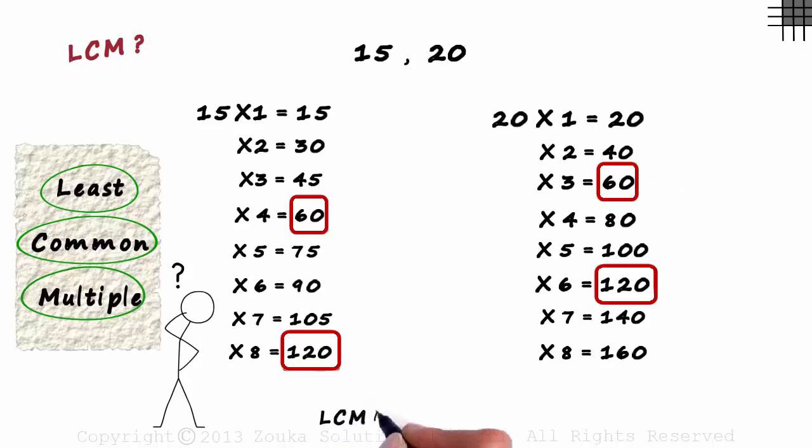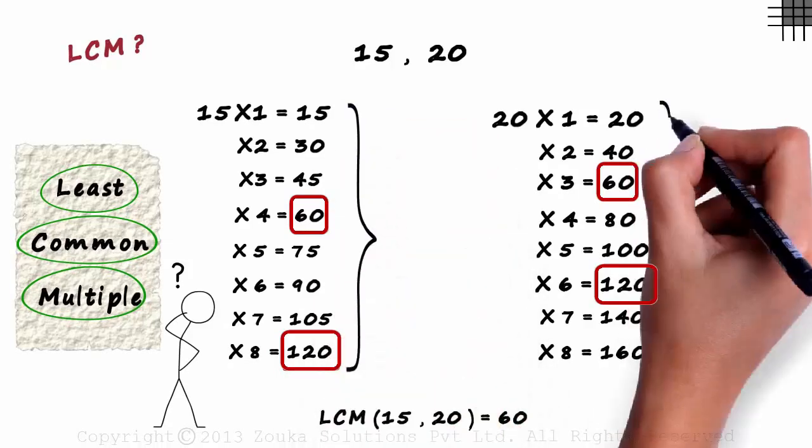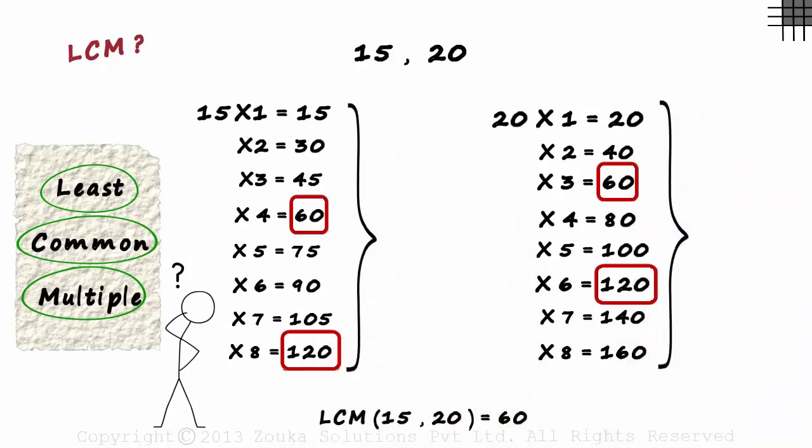So the LCM of 15 and 20 is 60. This was shown just to clear your concept of LCM. But is this the way we calculate the LCM of numbers?